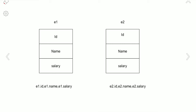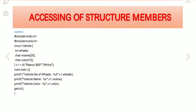Now let us see a small example regarding accessing structure members. Here I am considering a structure called 'vehicle' with data members: wheels, vehicle name, and color. We manually assign values in the program — V1 has wheels equal to 4, vehicle name is Maruti 800, and color is white. We are storing the details of only one vehicle using variable V1.